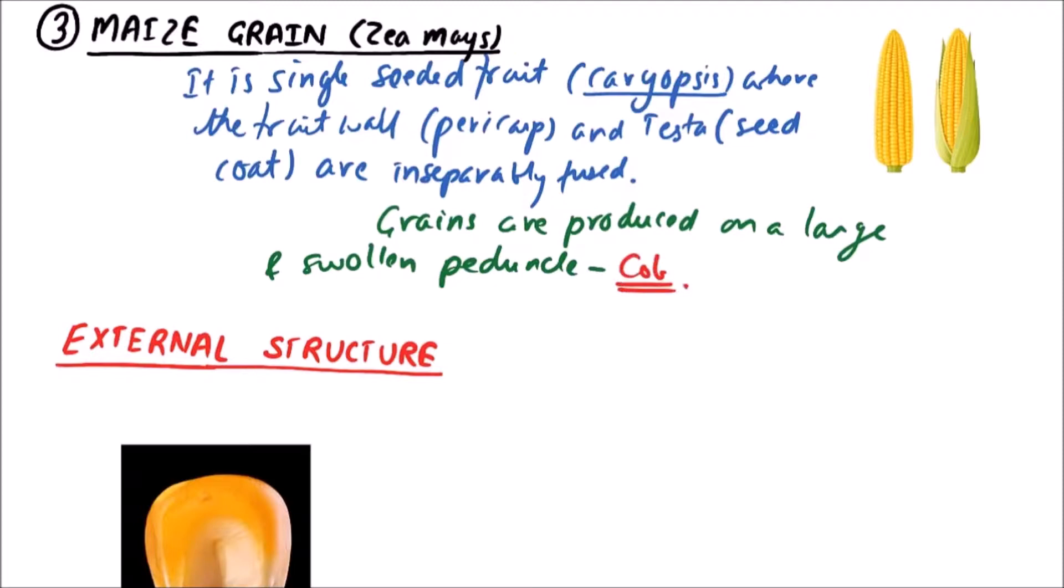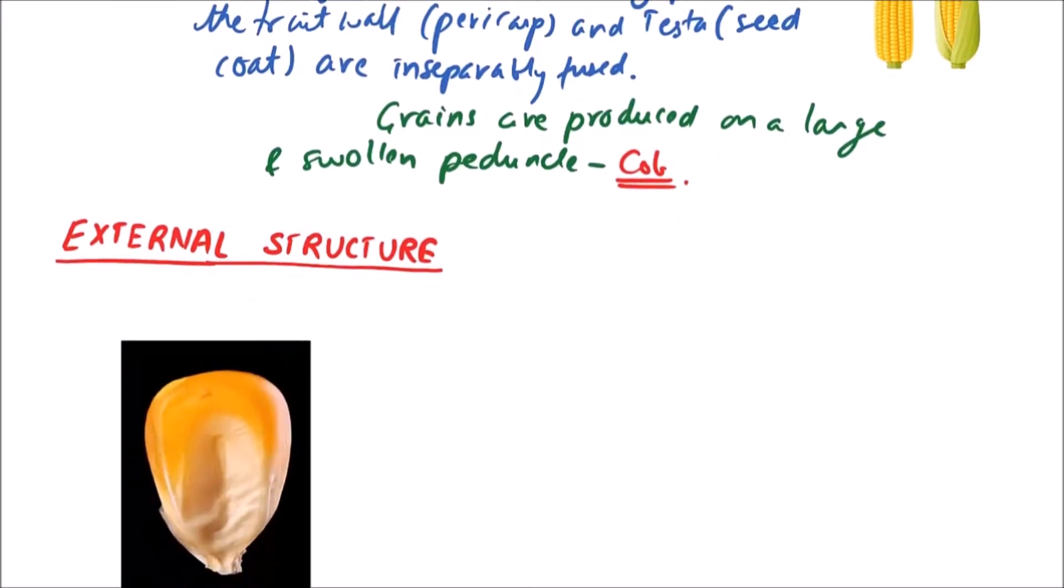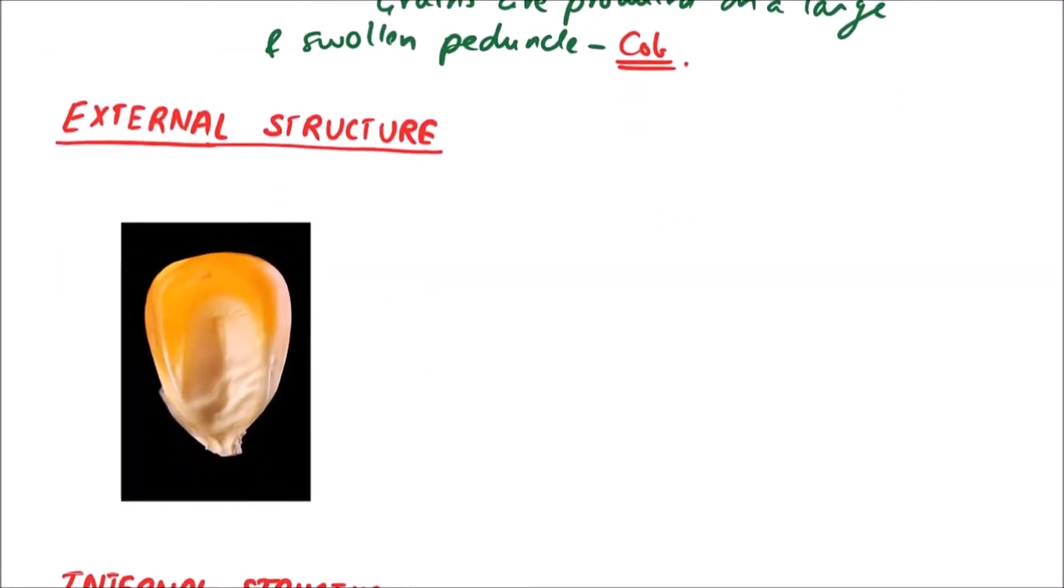Now the external structure of maize grain. We can observe the color, surface, and structure of maize grain. The color of maize grain is whitish yellow, the surface is smooth and shining, while the structure is conical type and flattened.